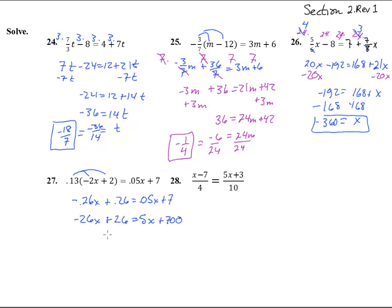So we just timesed everything by 100. Now get the x's together, I'm going to add 26x to both sides, so we get 26 equals 31x plus 700. Now subtract 700, and we get 31x equals negative 674, and divide by 31, and we get x equals negative 674 over 31, and if we punch that into a calculator, we get a negative 21.74.